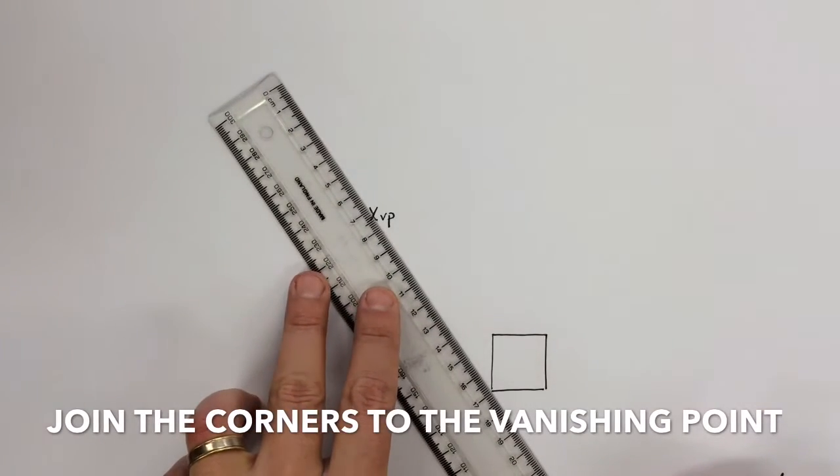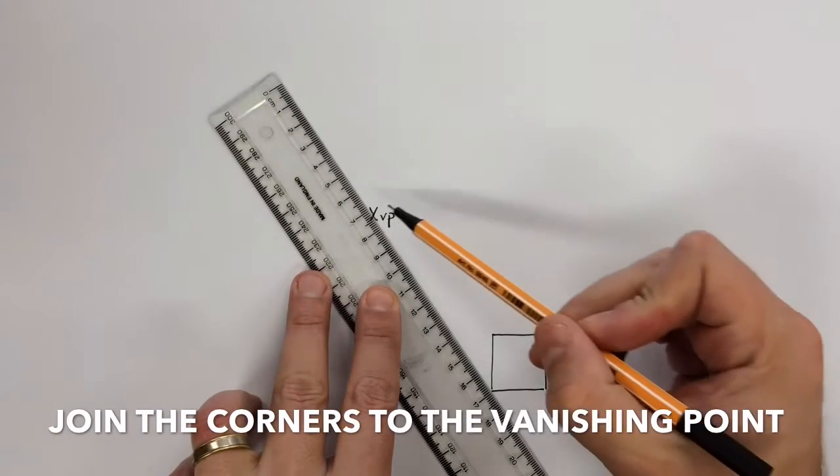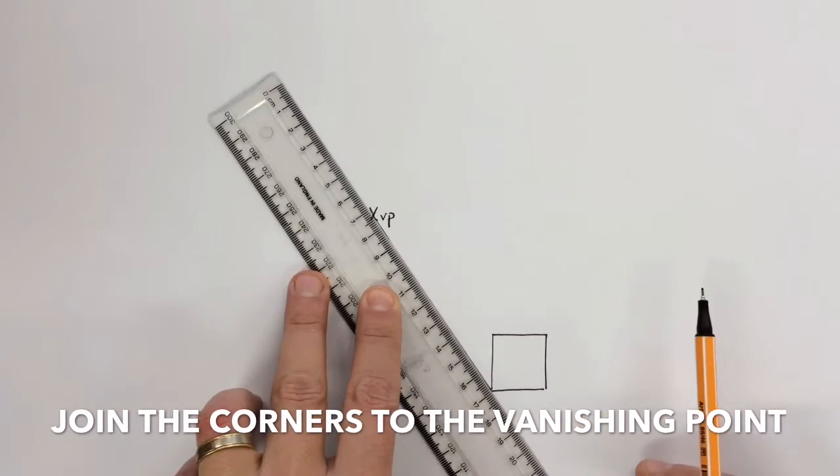Once you've drawn the square, using a ruler, project each corner back to the vanishing point, like so.